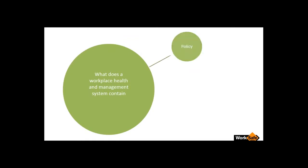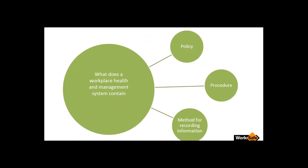So we need to work out what is actually contained in a Workplace Health and Safety Management System. The first thing it contains is a policy — this is why you're going to do the activity or implement the procedure. Then you'll have a procedure, which is how you're going to carry out that particular activity. And the last part is a method for recording information. Those are the three components. Ensuring you have all those things in place can sometimes be a bit onerous, especially if you're in a small business, but it's not as difficult as what you might think.